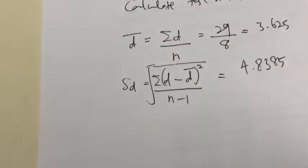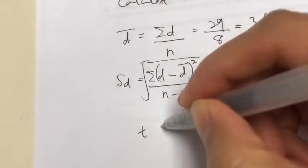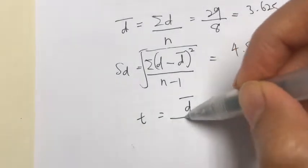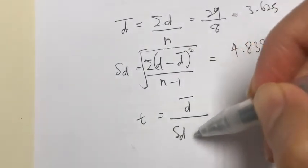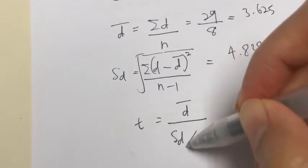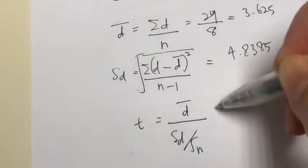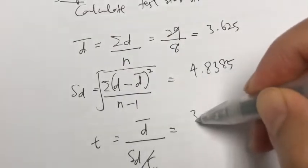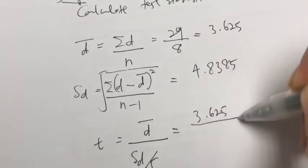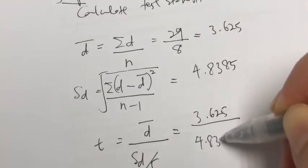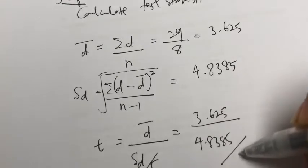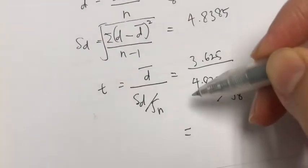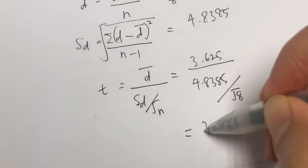Now finally we calculate the test statistic T, which is D-bar over S_D over the square root of the sample size. Plugging in the figures: 3.625 divided by (4.8385 divided by the square root of 8), you get T = 2.12.